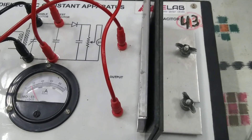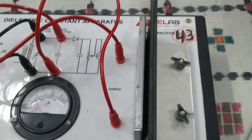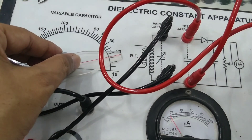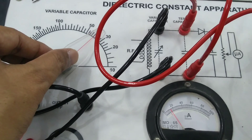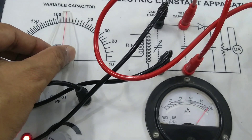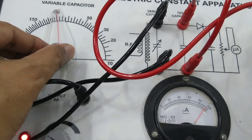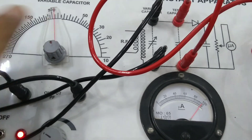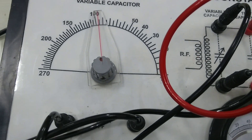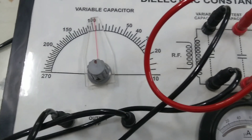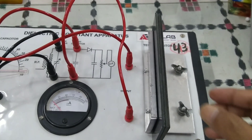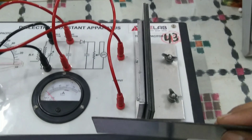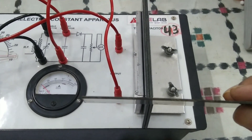Here I have taken two plates having thickness 0.4 centimeter each, and by using the radio frequency resonance technique, you can see the capacitance of the capacitor — here it is about 95 picofarad. Using dielectric slabs of different thickness, you measure the capacitance by using the frequency resonance technique.